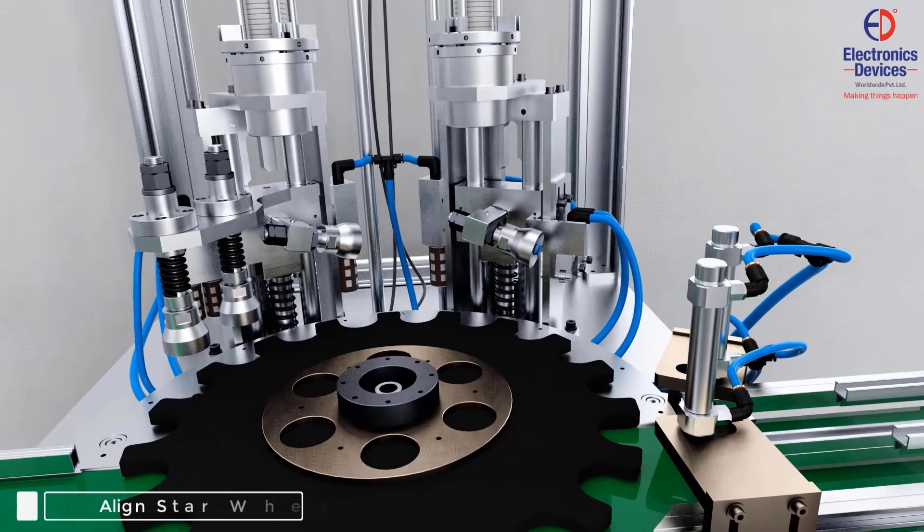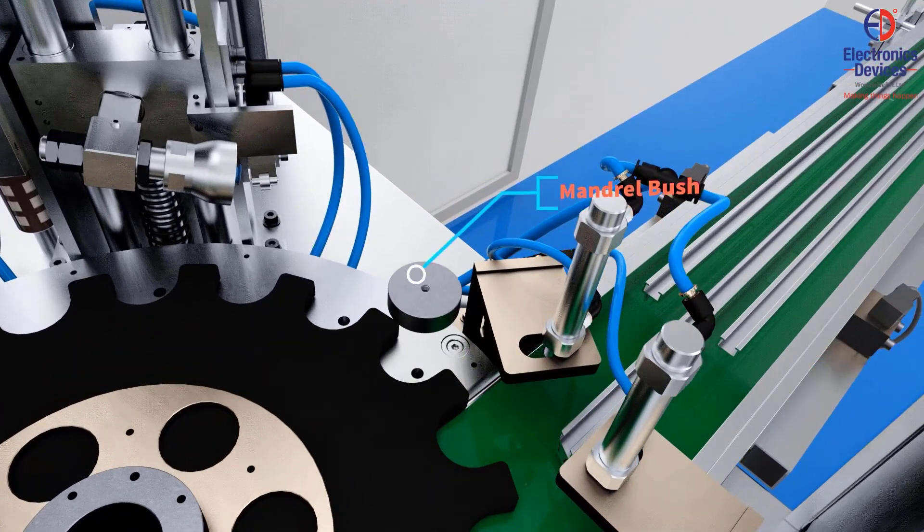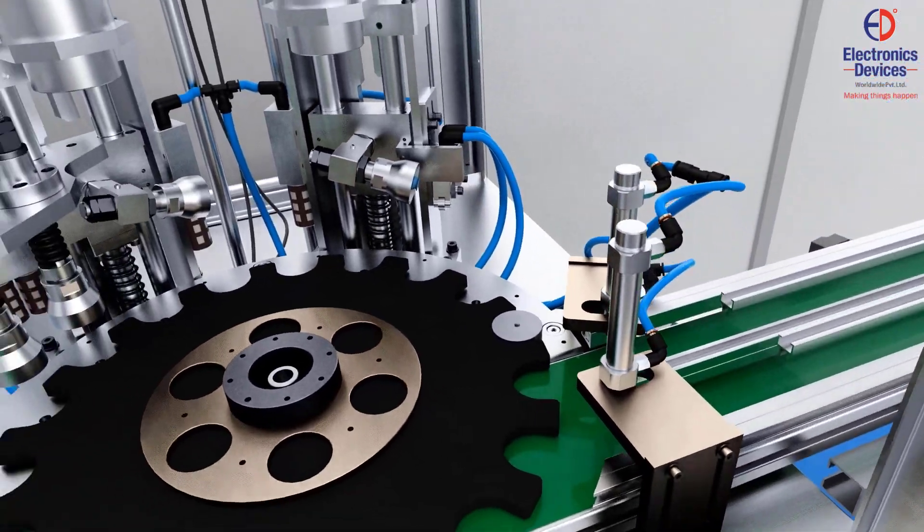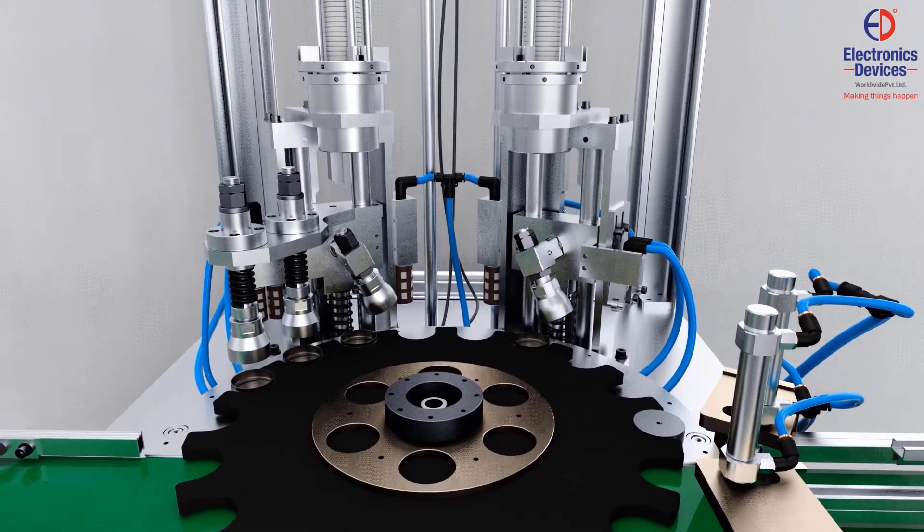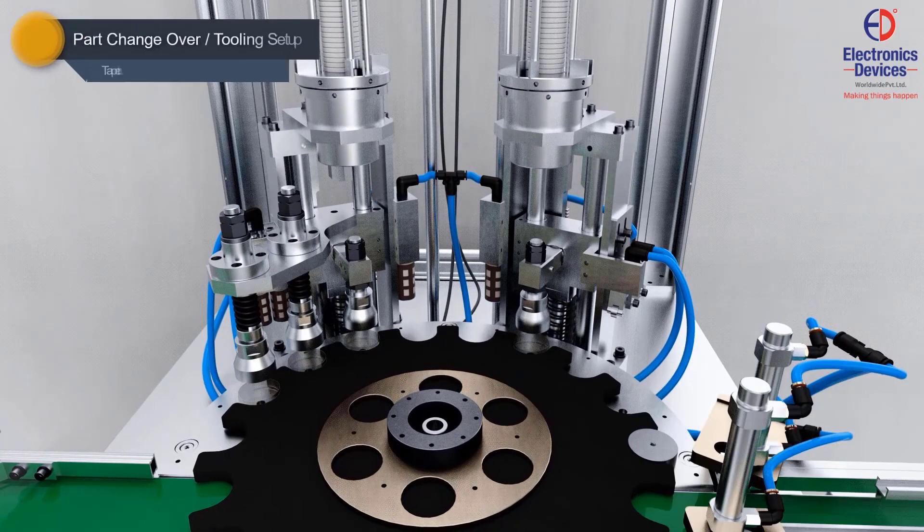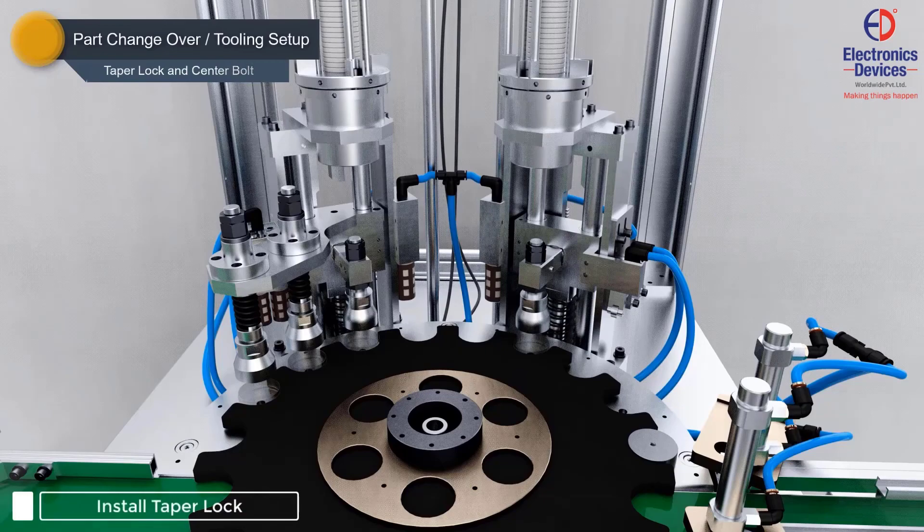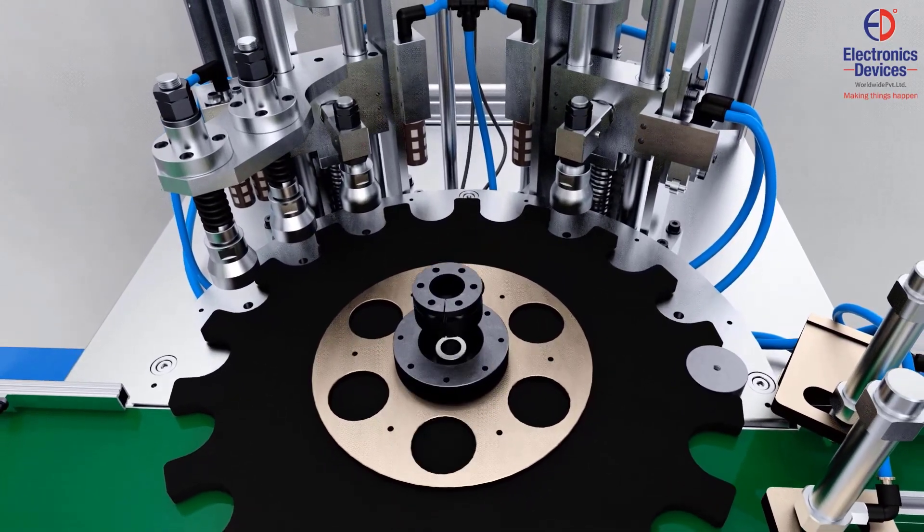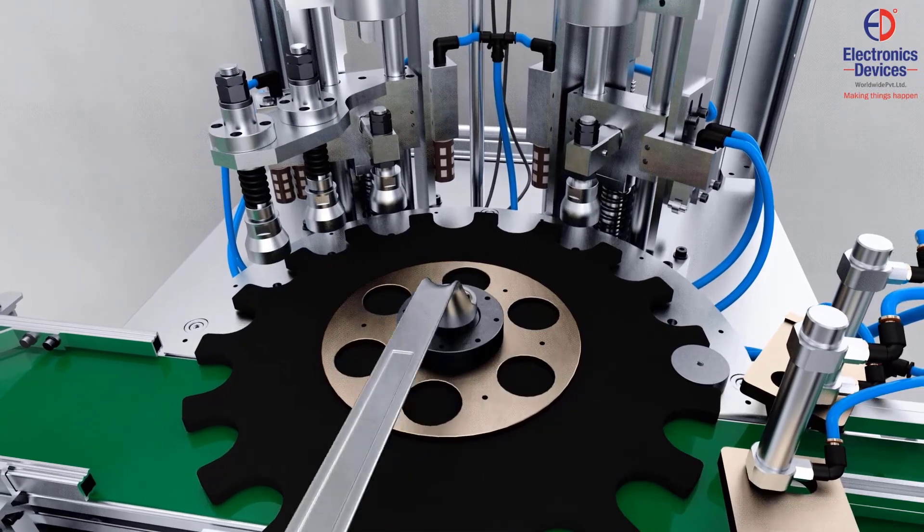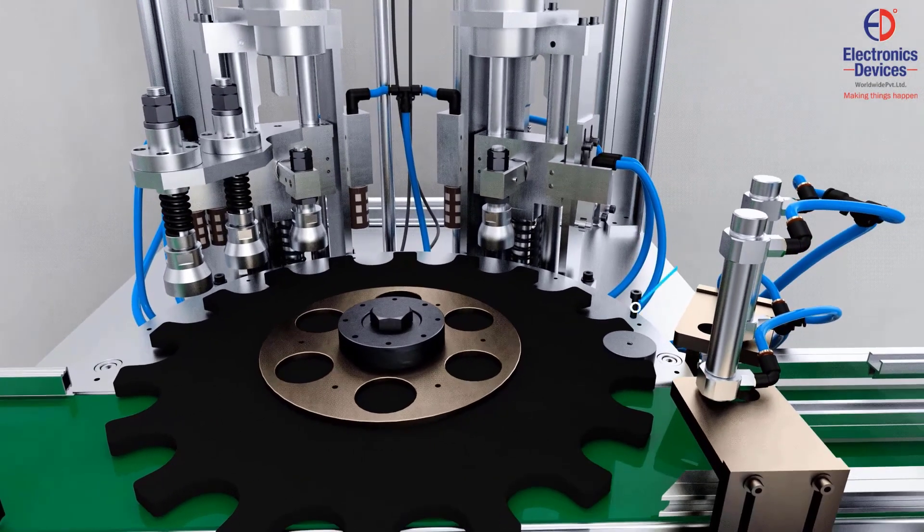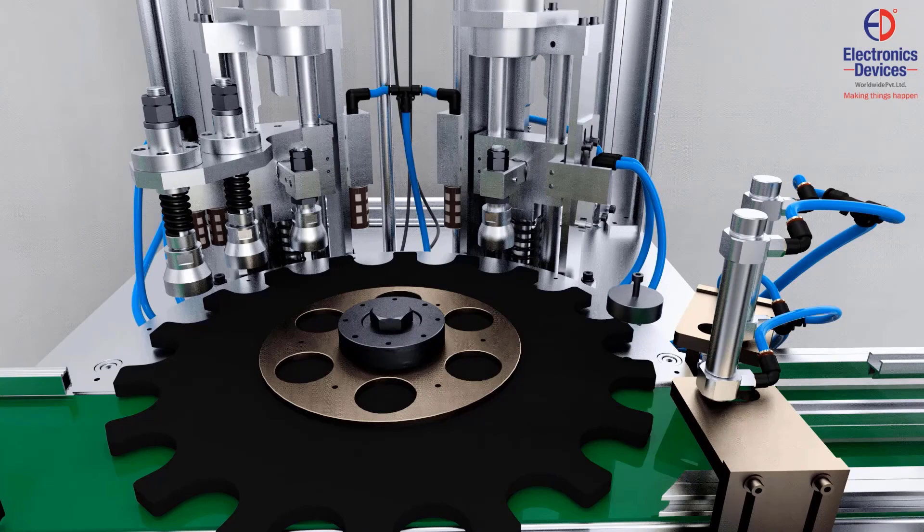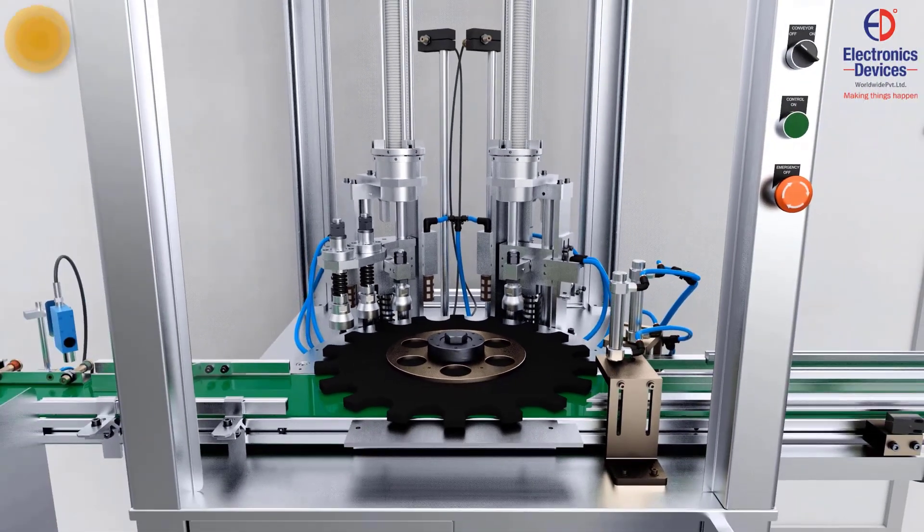After the assembly of changeover parts, align the star wheel with the help of the mandrel bush. After assembling the taper lock and center bolt, remove the mandrel bush with the help of a bolt. And then, install the guide ring.